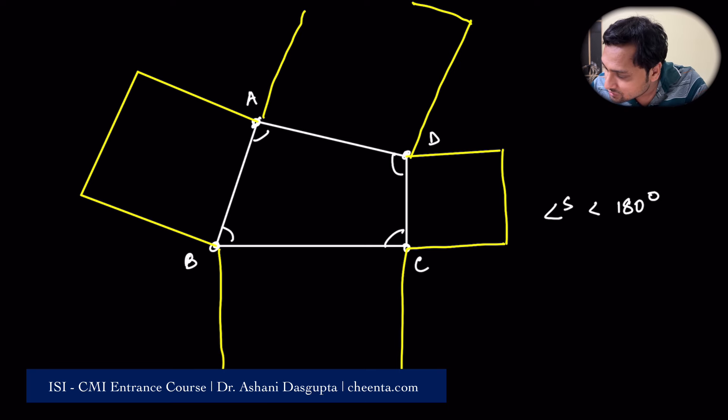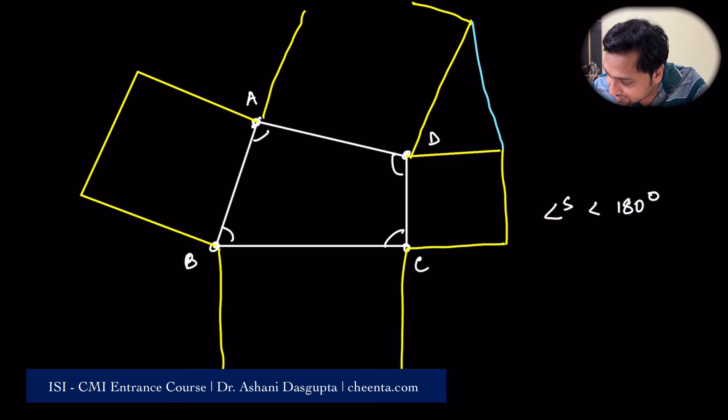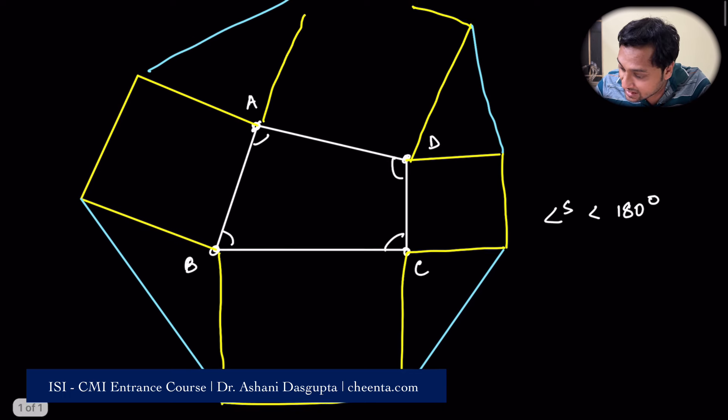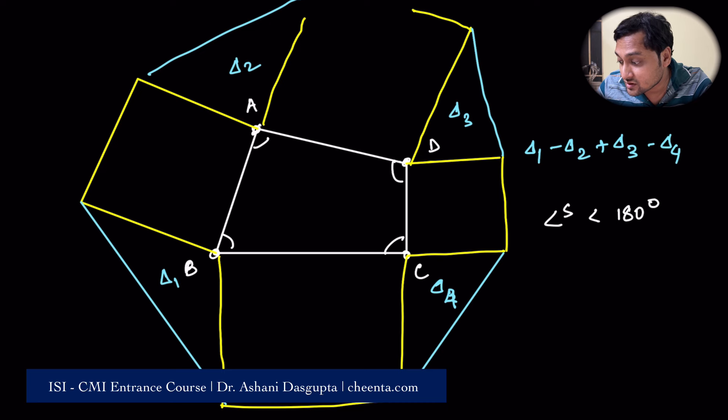Well, the first thing that we have to show is that, let me join these triangles. The first thing that we have to show is that these four triangles have a very interesting relationship. So this is delta 1, delta 2, delta 3, delta 4. Then we have to show that delta 1 minus delta 2 plus delta 3 minus delta 4 is equal to 0.